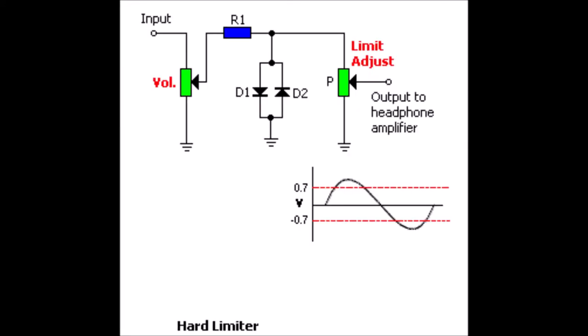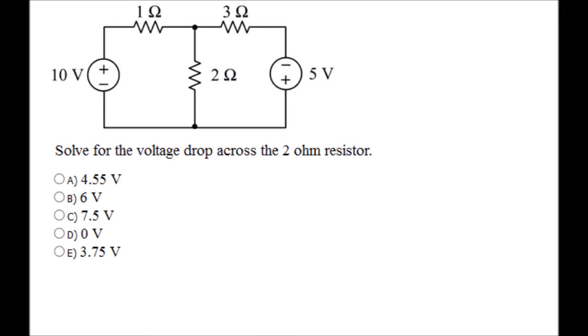Amplitude limiting. In electronics, a limiter is a circuit that allows signals below a specified input power or level to pass unaffected while attenuating, or lowering, the peaks of stronger signals that exceed this threshold. Limiting is a type of dynamic range compression. Clipping is an extreme version of limiting. Voltage drop. Voltage drop is defined as the amount of voltage loss that occurs through all or part of a circuit due to impedance. A common analogy used to explain voltage, current, and voltage drop is a garden hose. Voltage is analogous to the water pressure supplied to the hose.